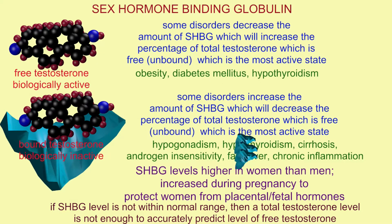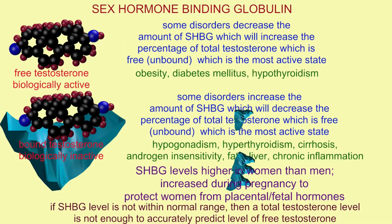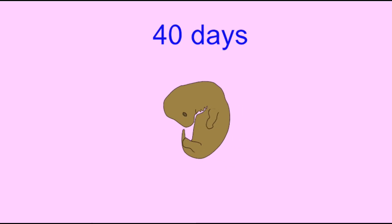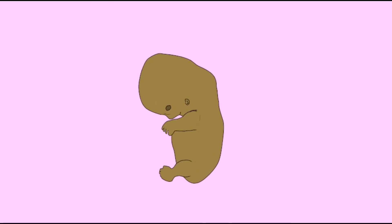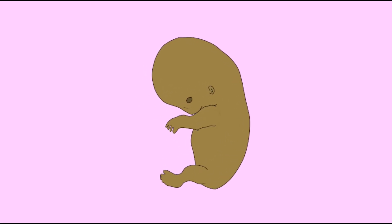In general, SHBG levels are higher in women than in men and increase during pregnancy to protect women from hormones produced by the placenta or fetus.